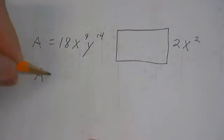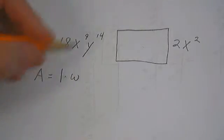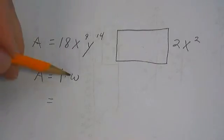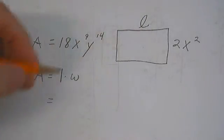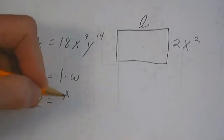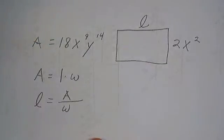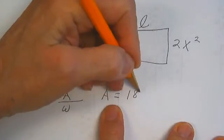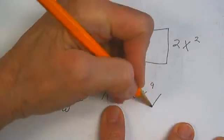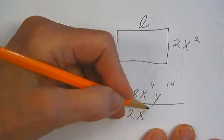We know area equals length times width. We also know that a missing dimension, let's call it the length, is equal to the area divided by the width. So if we have area equals 18x to the 9th y to the 14th and we know that the width is 2x squared.